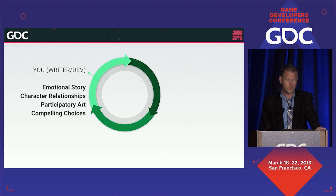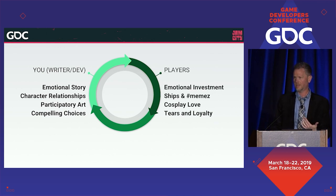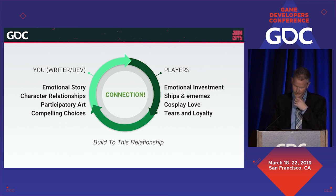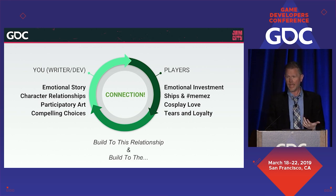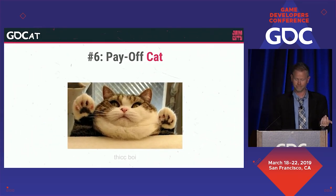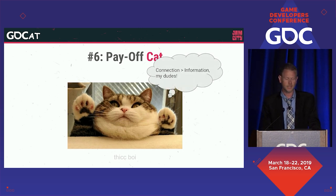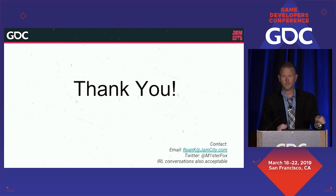Back to the circle. It starts with you: emotional stories, character relationships, participatory art, compelling choices. And on the other side, you've got the players. You have to give to them and make it the circle, because you're going to get that connection. You want to build up to this relationship over time. And of course, you want to build to the payoff cat. So that is my presentation — thank you.